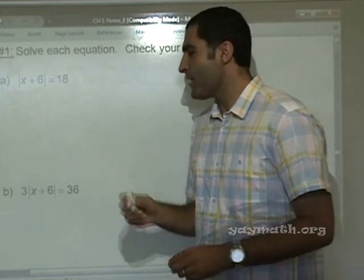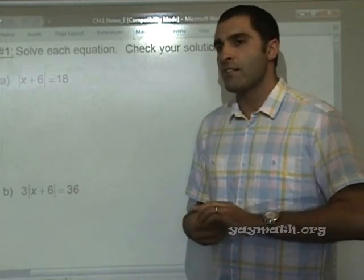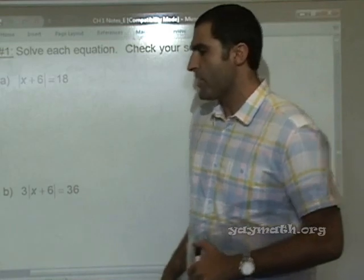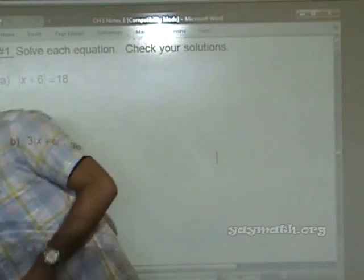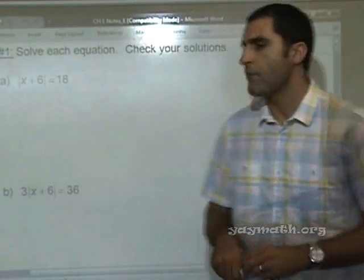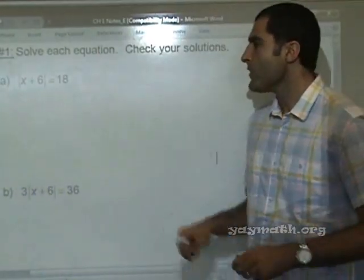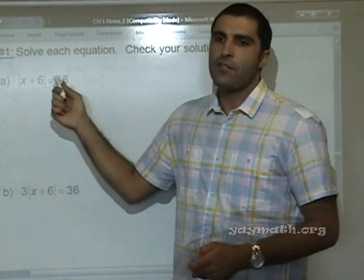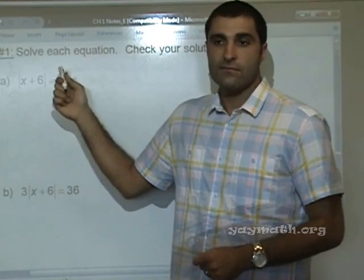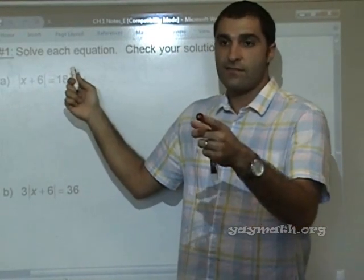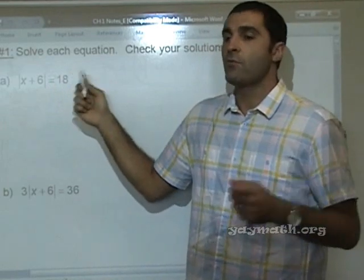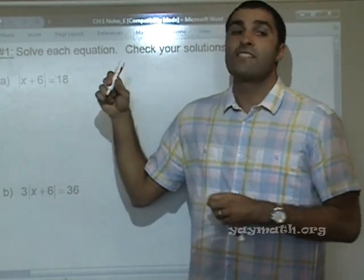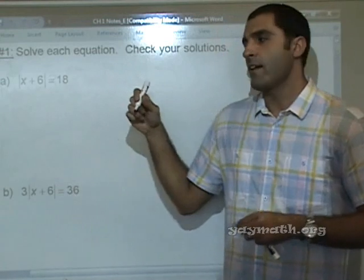All right, so let's begin. This should be relatively short, so I think you'll appreciate that, and I think it'll be fairly straightforward. So, absolute value — what does absolute value do? It makes any number positive. What if the number's already positive? Still positive. Right on, good.